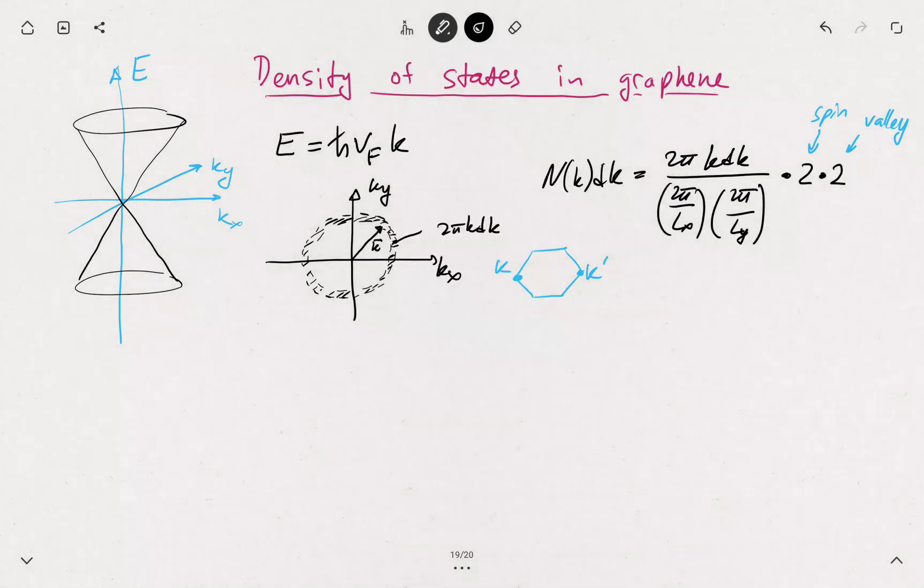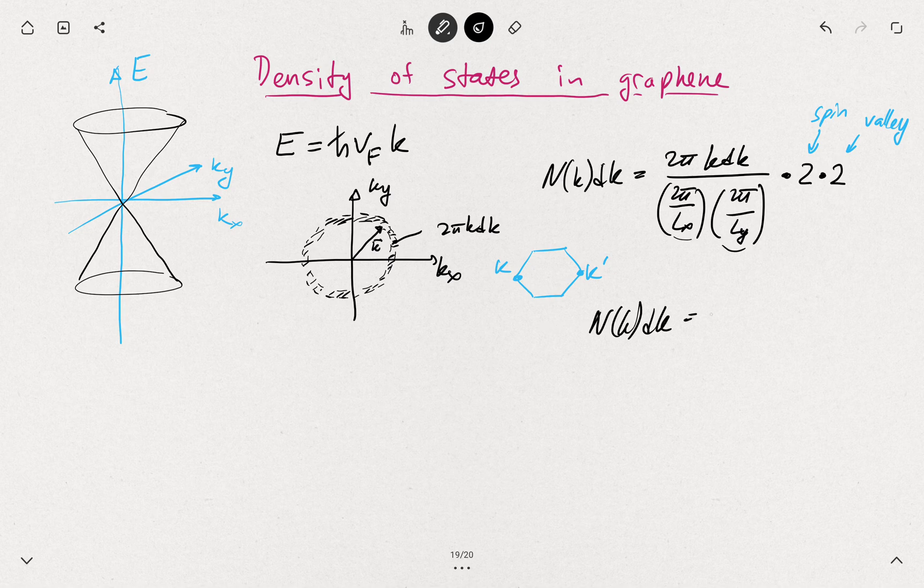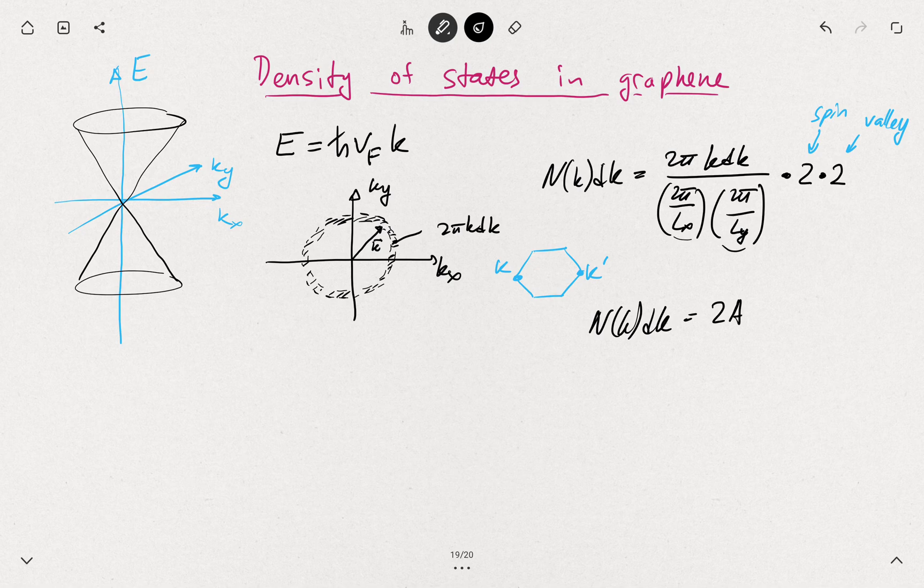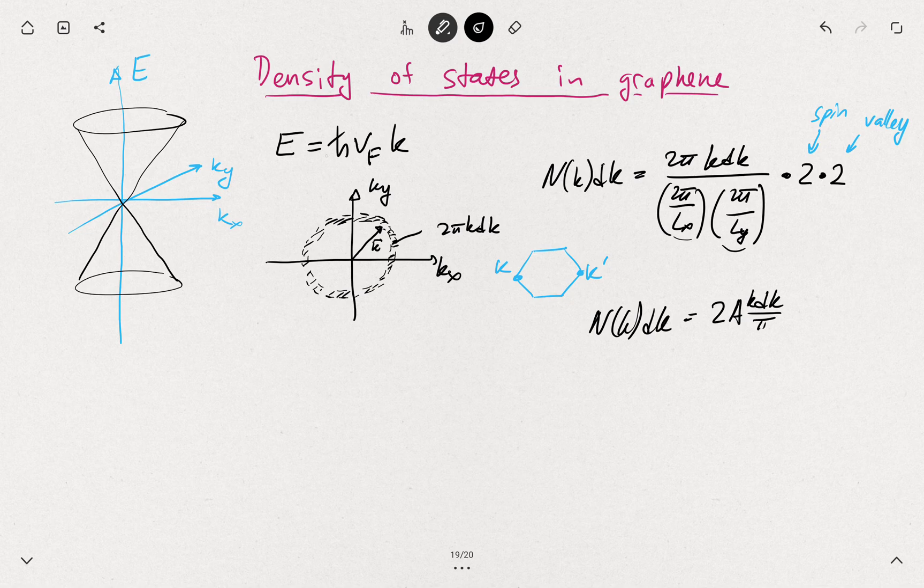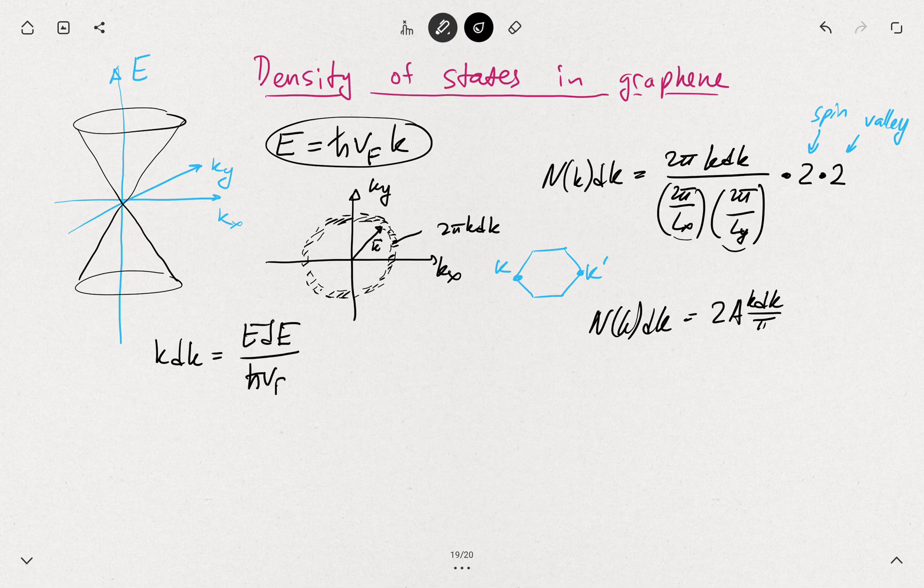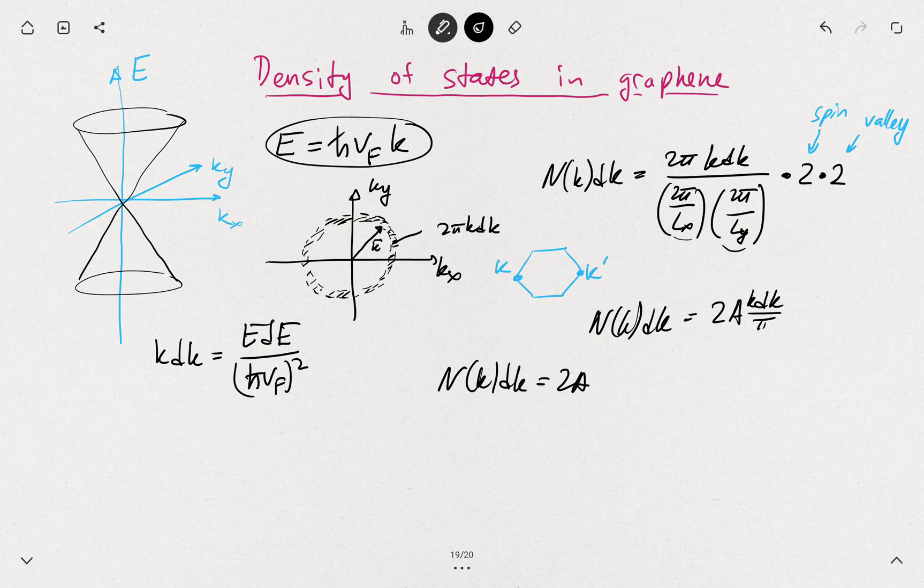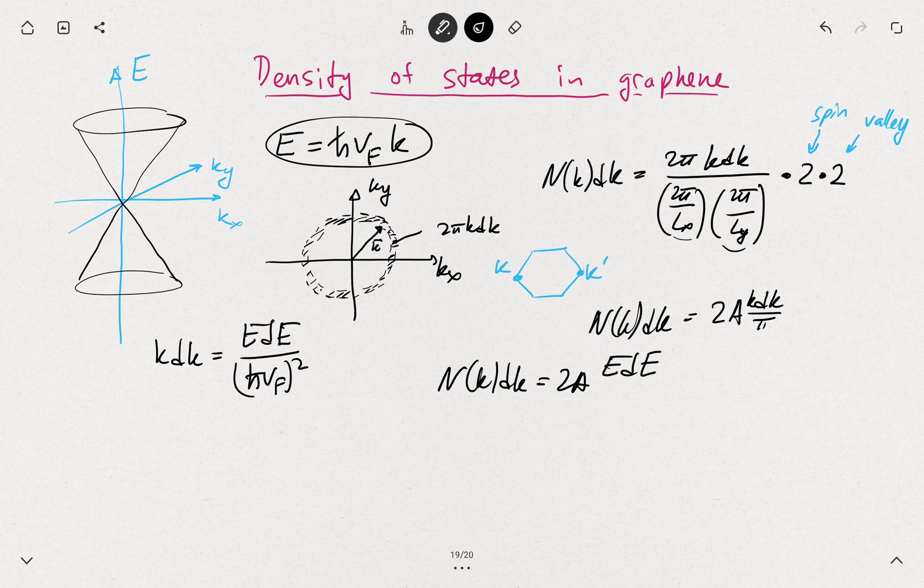Then we can rearrange all these bits, lx and ly's and the 2π's get cancelled. So your N of k dk is now 2A k dk over π, where A is lx times ly. k dk we can take from the dispersion relation. So k dk equals E dE over h-bar squared vf squared. That means now that N k dk is 2A E dE over π h-bar squared vf squared.